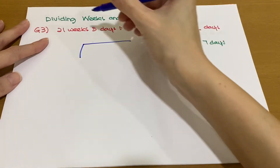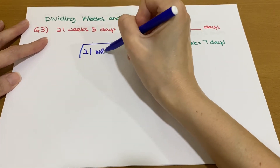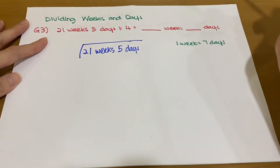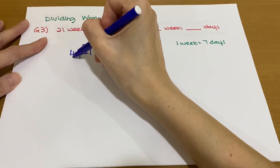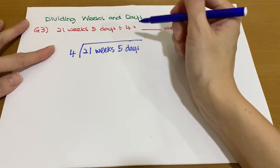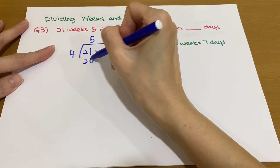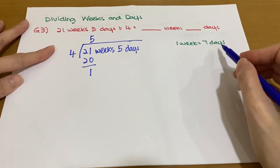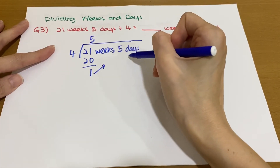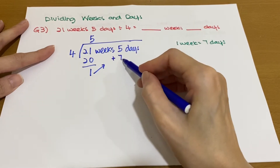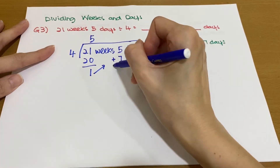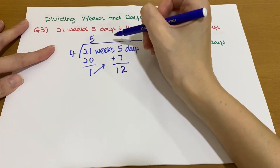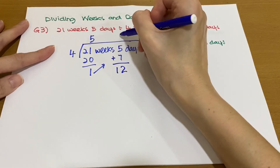We put 21 weeks 5 days inside and divide by 4. Dividing the weeks first: 5 × 4 = 20, balance 1. We know 1 week equals 7 days, so we convert 1 week to 7 days. 5 days plus 7 days gives 12 days. 3 × 4 = 12, balance 0.